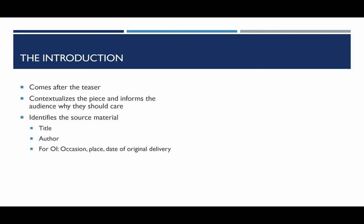It needs to identify the source material at the end, so you need to mention the title of the piece, the author, and then for OI, the occasion, place, and date of the original delivery. For example, if it was a commencement speech, you would state what date it was and where it was at — similar for a TED Talk: what conference it was at, what location, and the date. We'll go over that later.